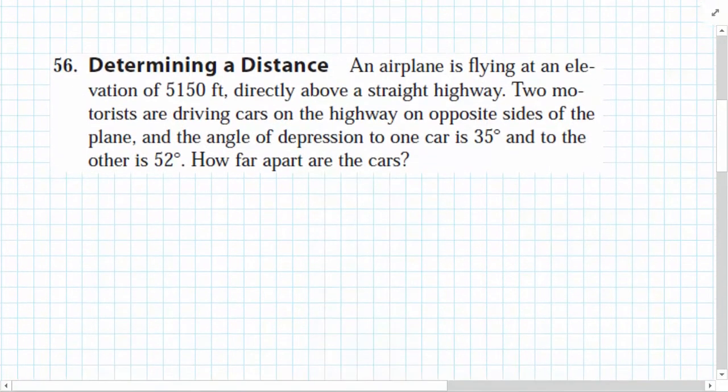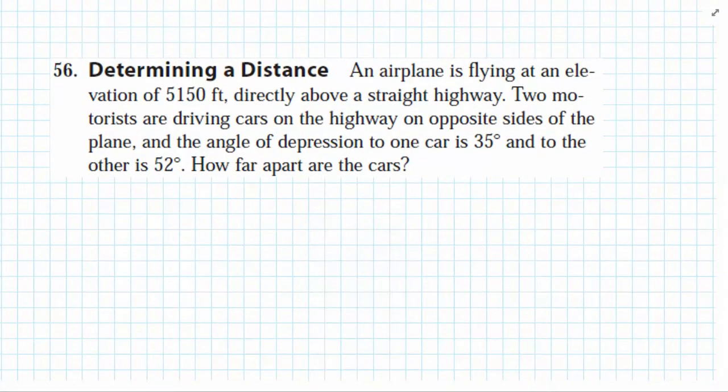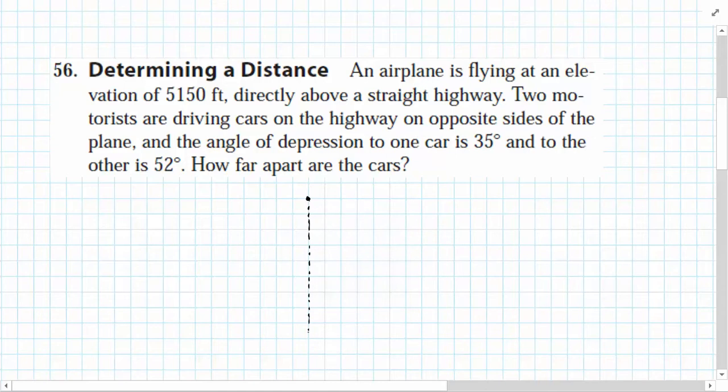Let's take a look at another example. This time, an airplane is flying at an elevation of 5,150 feet. So right off the bat, I'm going to put a dot on my page and come down from that dot to level ground. This represents the height of the airplane, 5,150 feet. So the ground is going to be perpendicular to that line. Two motorists are driving cars on the highway on opposite sides of the plane. So this means that one motorist is here on the left side of the airplane, and one can be over here on the right side.